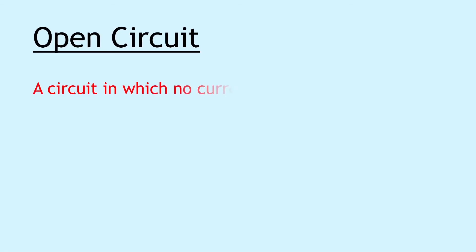Next we have open circuit, and an open circuit is a circuit in which no current is flowing, i.e. the switch is open. And this is opposite to a closed circuit in which current is flowing, i.e. when the switch is closed.